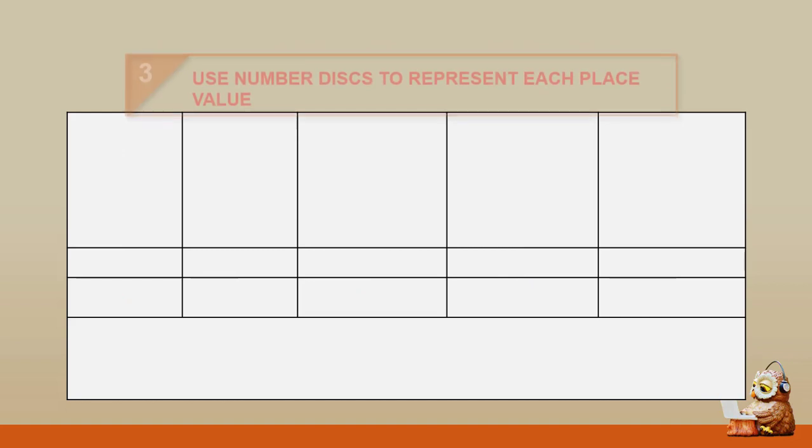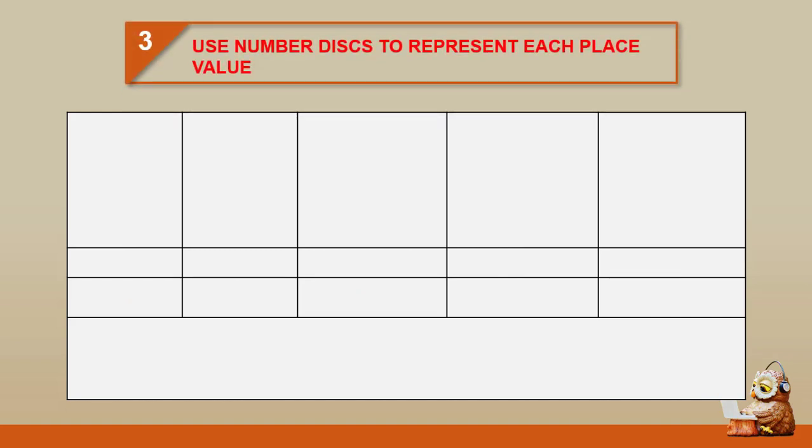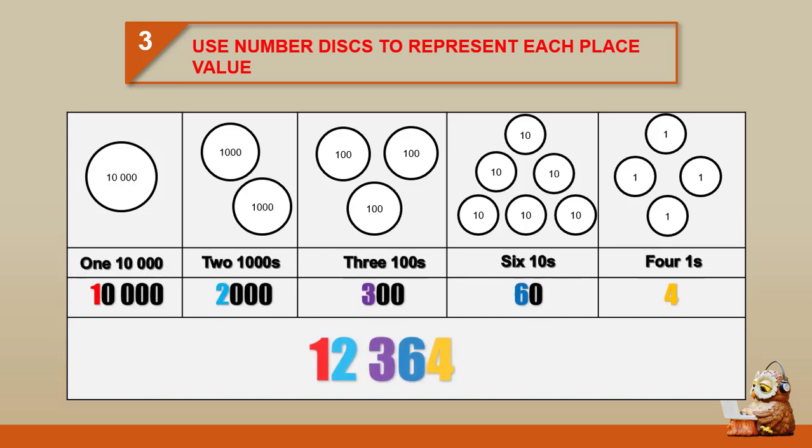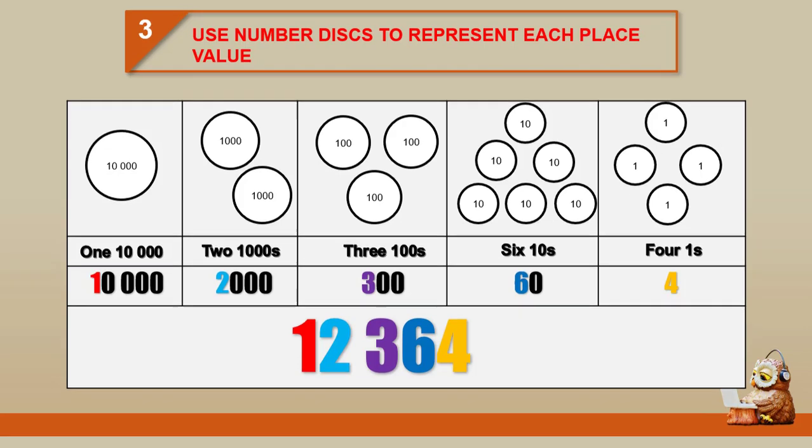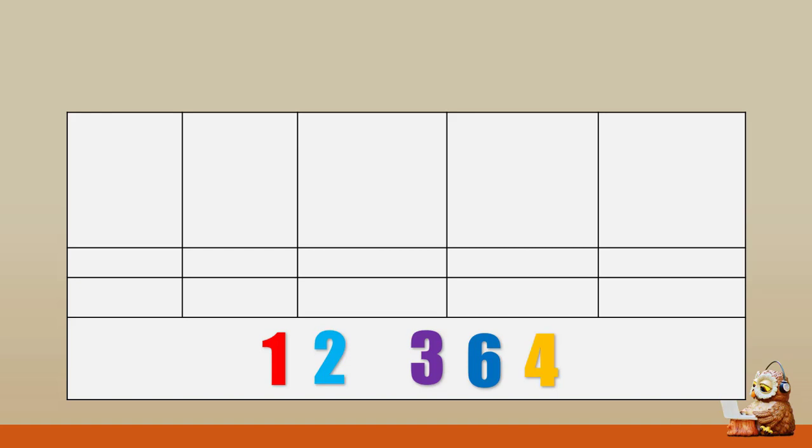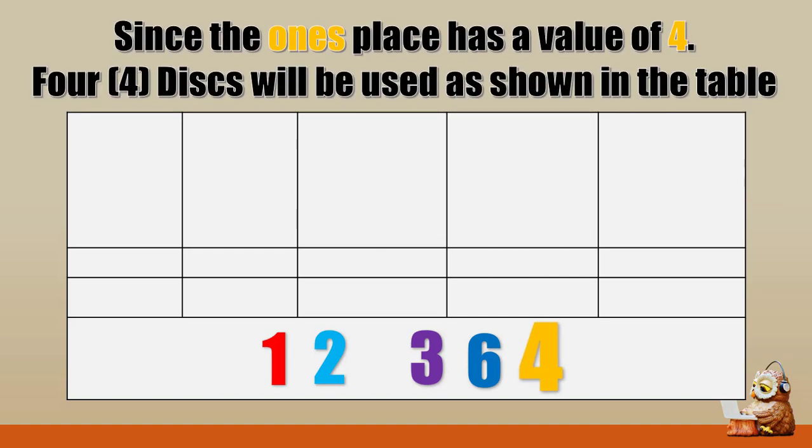Step 3: Use number disks to represent each place value. I will do it first and will try to explain later. Remember, the number in each place value will determine the number of disks to be used. Let me explain how it will be done. In the number 12,364, the number in the 1's place is 4, therefore 4 disks with a mark of 1 will be used.